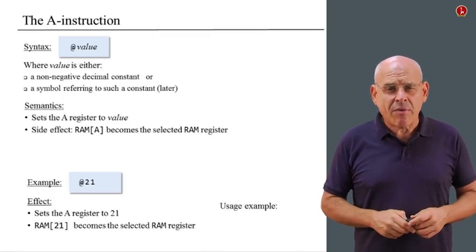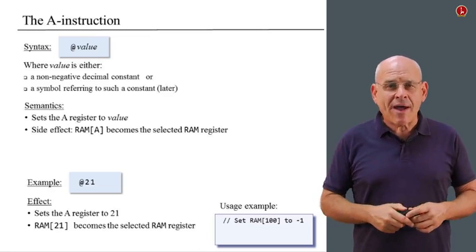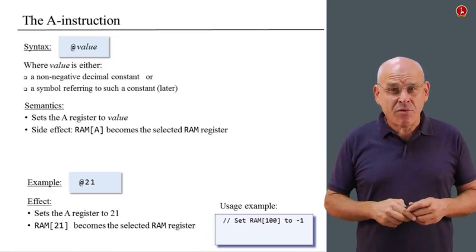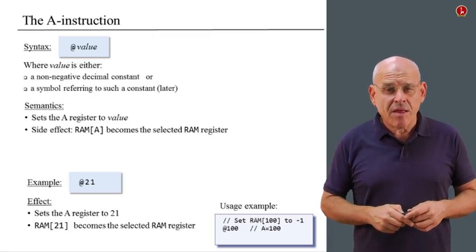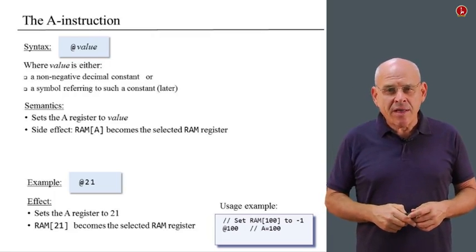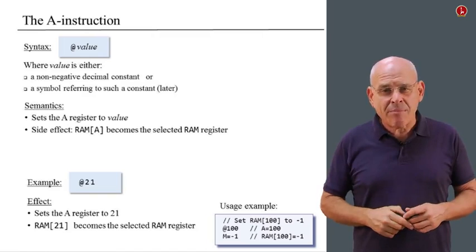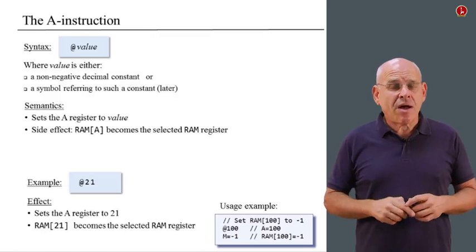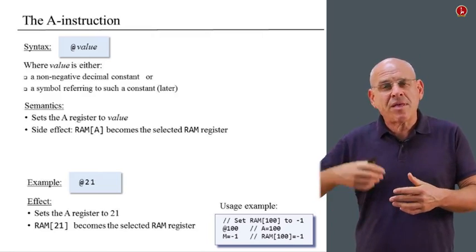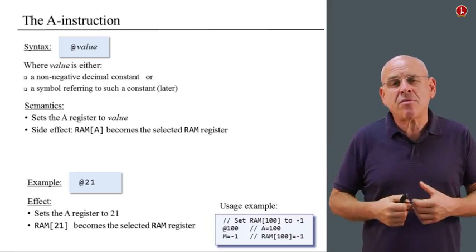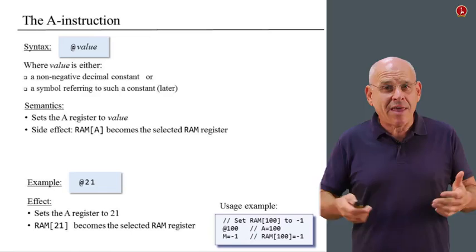Here's an example of how we actually use this instruction. Let's say that we want to set RAM 100 to minus 1. How do I do it? Well, the first thing that you have to do is select the register on which we want to operate, and we do it by saying at 100. Once we do this, we get the side effect working, and then we can say M equals minus 1. Because M now denotes register number 100 in the memory unit. So that's how we use the A instruction. We always need it before we operate on the memory. Before we do something to the memory, we have to select a register. And that's, by the way, why it's called A, A for addressing.